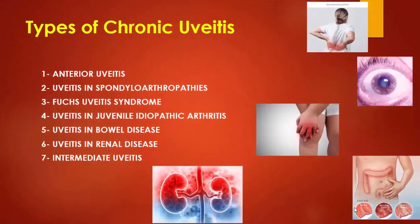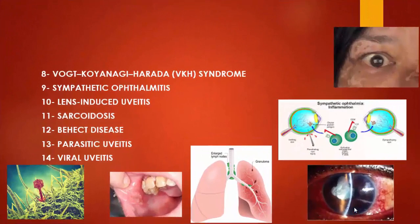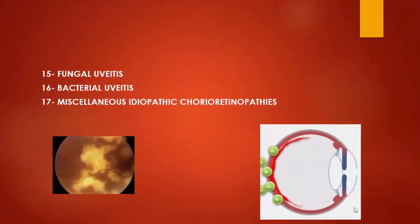Types of chronic uveitis include anterior uveitis, uveitis in spondyloarthropathies, Fuchs uveitic syndrome, uveitis in juvenile idiopathic arthritis, uveitis in bowel disease, uveitis in renal disease, intermediate uveitis, Vogt-Koyanagi-Harada syndrome, sympathetic ophthalmitis, lens-induced uveitis, sarcoidosis, Behçet's disease, viral uveitis, fungal uveitis, bacterial uveitis, and lastly miscellaneous idiopathic chorioretinopathies.